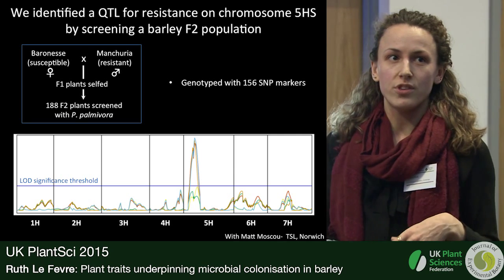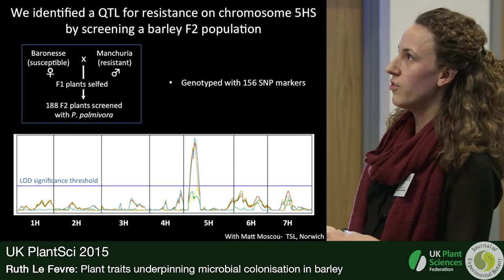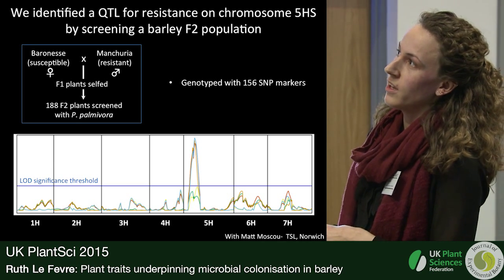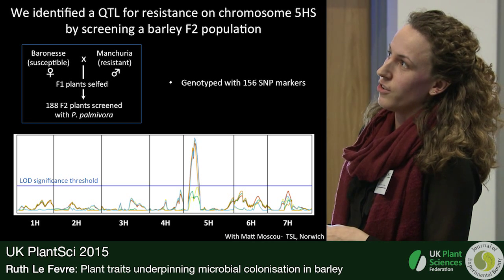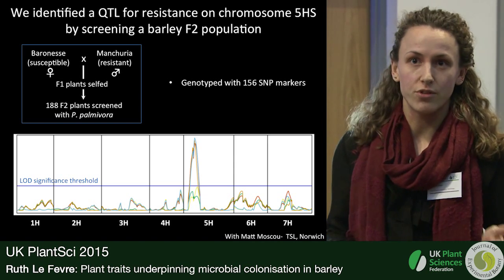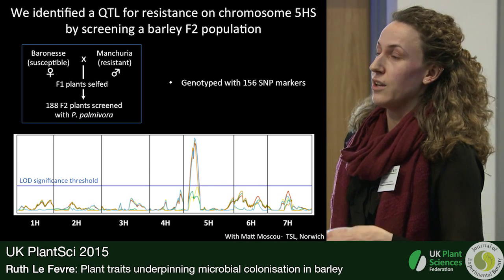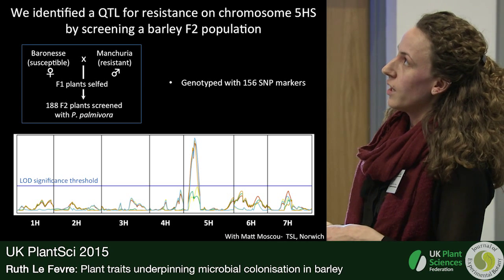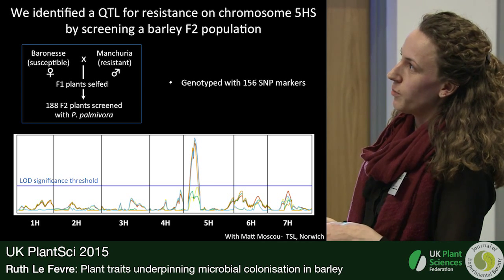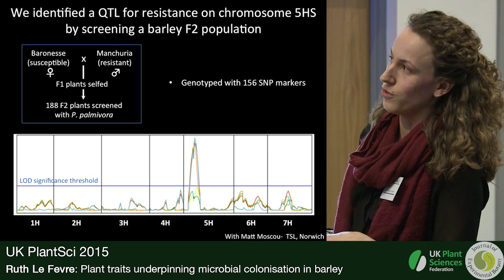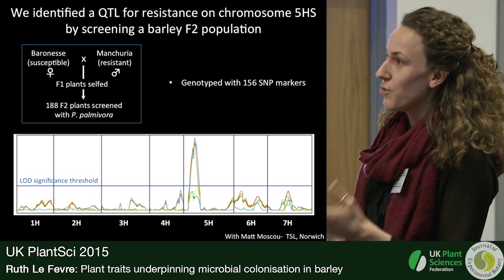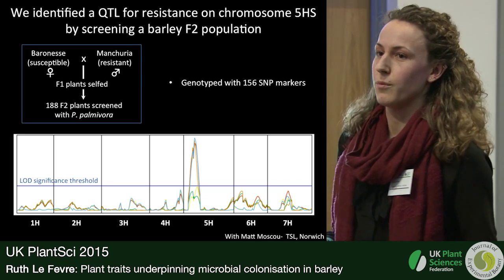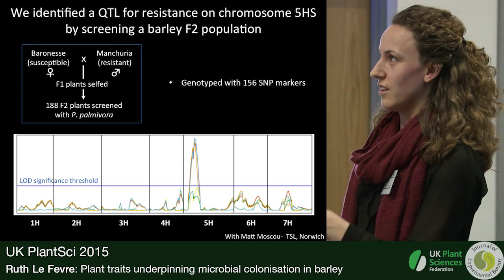We are collaborating with the Sainsbury Lab in Norwich, who have done a cross between these two varieties. They generated F1 plants which were selfed, giving rise to an F2 population of which we have screened 188 individual plants for their resistance to Phytophthora palmivora. These have been genotyped, and what we've found is that there seems to be a QTL contributing to resistance on the short arm of chromosome 5. This is really promising and we're looking into enriching our genetic map with markers to identify this trait further.